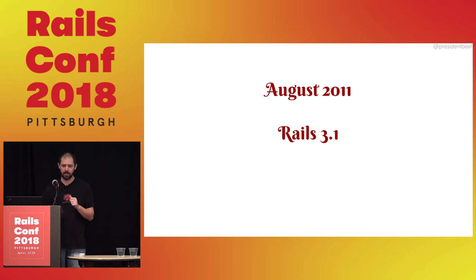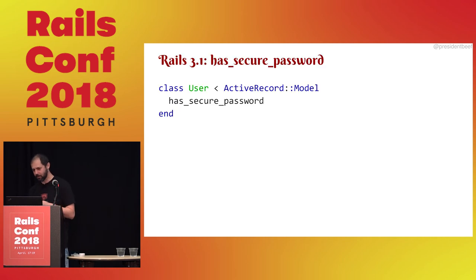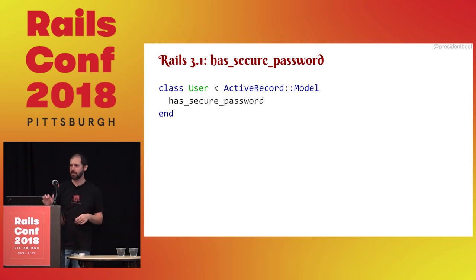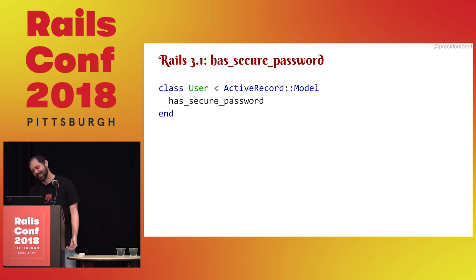One year later, Rails 3.1: we got has_secure_password. It adds a password attribute to your user model, automatically hashes it with bcrypt, and gives us an authenticate method that does the comparison for us. It was a good thing to add.